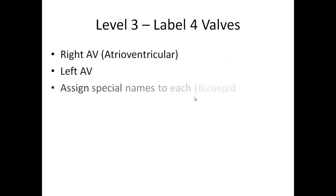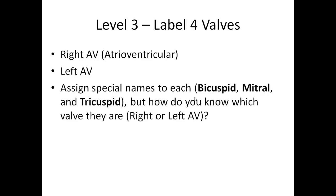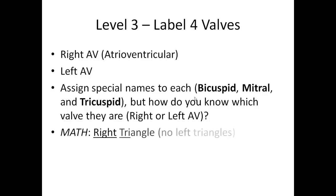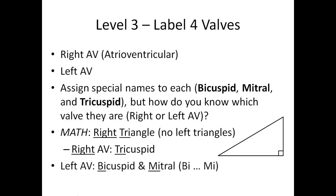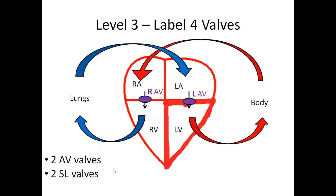We need to assign the special names you'll commonly hear in a hospital or clinical setting. There are three names but only two valves, so one has two names and one has three. There's bicuspid, mitral, and tricuspid. A nice way to remember: in math, we only have right triangles, not left triangles — so take 'right' and 'tri,' which tells you the right AV valve is the tricuspid. For the left AV, notice that bicuspid and mitral both start with 'Bi' and 'Mi,' so those two go together on the left side. The left AV is the bicuspid and mitral; the right AV is the tricuspid.